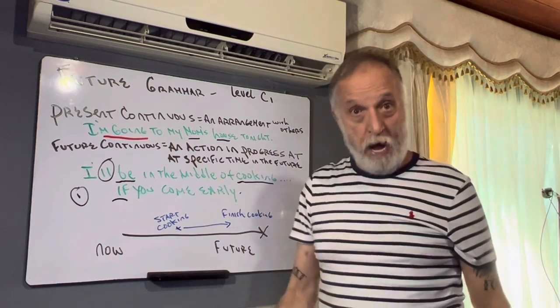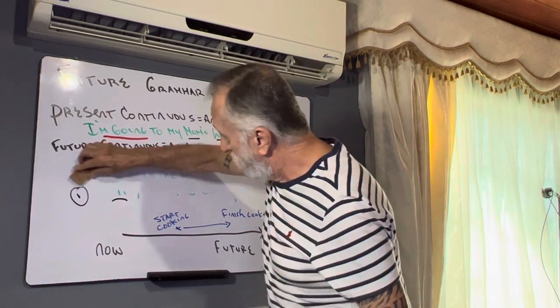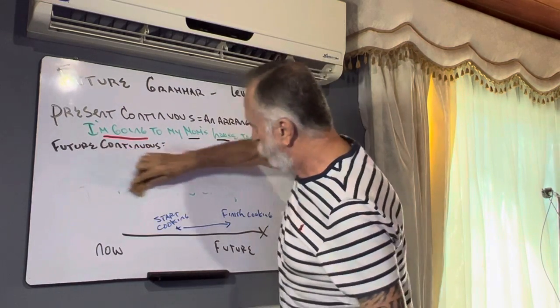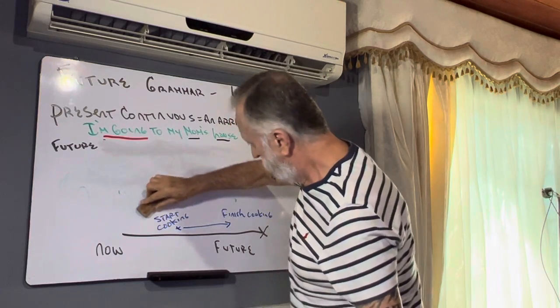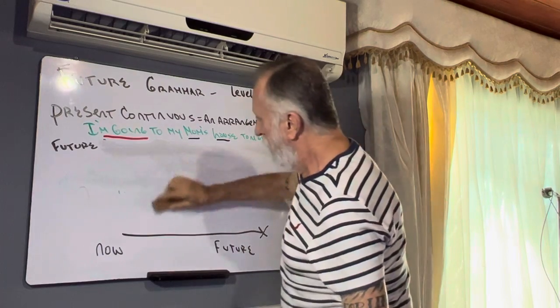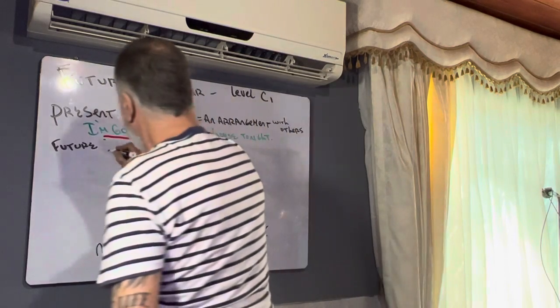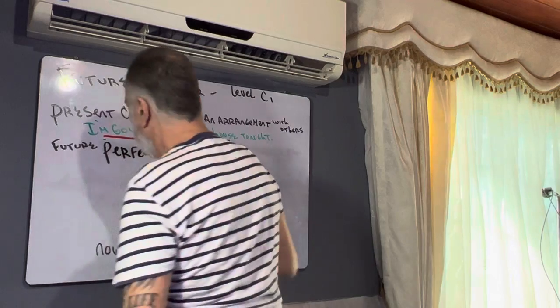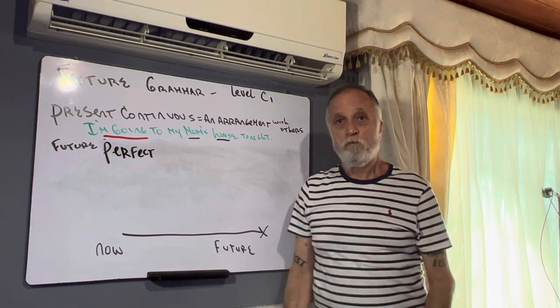Remember, you can play this back so you understand it. I'm going to take it to the next one. To the next future grammar. It's a good one. It's a really good one. It's a combo. I like to call it a combo. Future perfect. Future perfect.